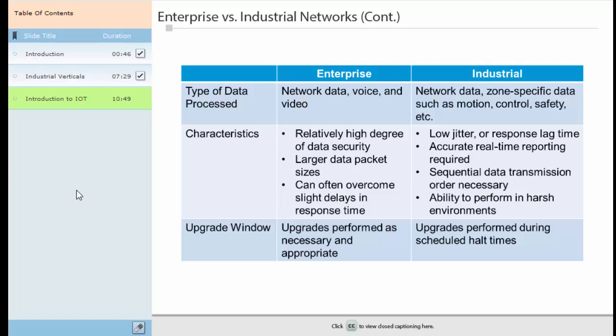The ability of equipment to perform under harsh conditions is a common standard of an industrial network, whereas enterprise networks typically operate in sheltered, climate-controlled buildings with relatively little equipment movement required. Another striking difference is that in an enterprise network, updates and upgrades can be performed as needed and equipment can typically be added or removed from the network with little to no ill effect. In an industrial system, however, updates, upgrades, and the addition of equipment must be meticulously planned and only implemented when all work on the network or zone has come to a complete stop. Otherwise production may be negatively affected, safety and security risks may inadvertently rise, and the cost from lost revenue may be staggering.